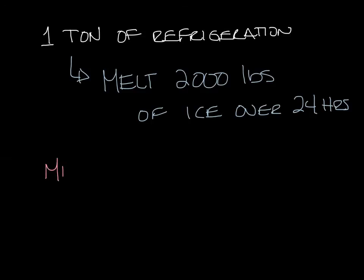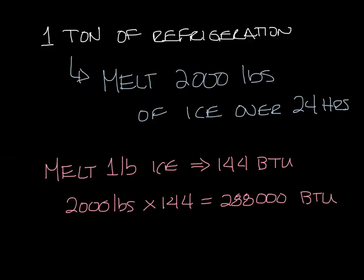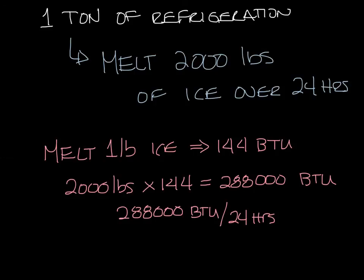When one pound of ice melts it absorbs 144 BTU. So for 2,000 pounds of ice, that would be 2,000 times 144, which equals 288,000 BTU. Now let's divide that by 24 hours, and you get 12,000 BTUs per hour — and that is equal to 1 ton of refrigeration.